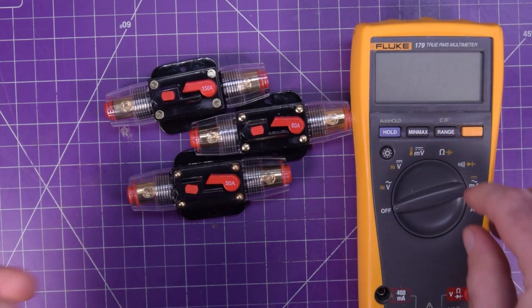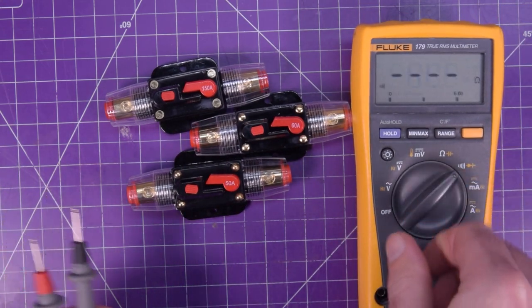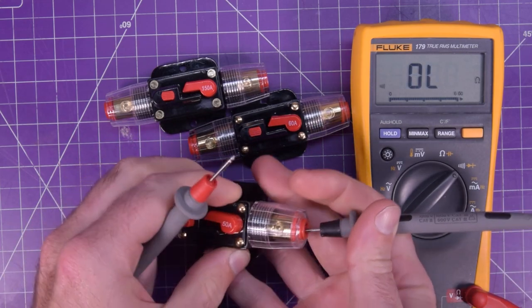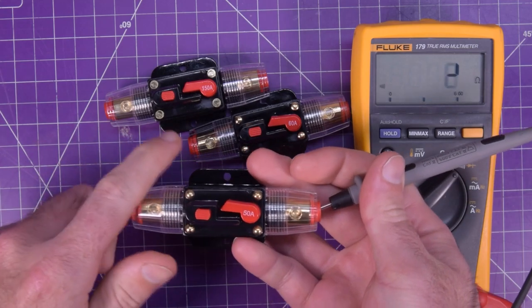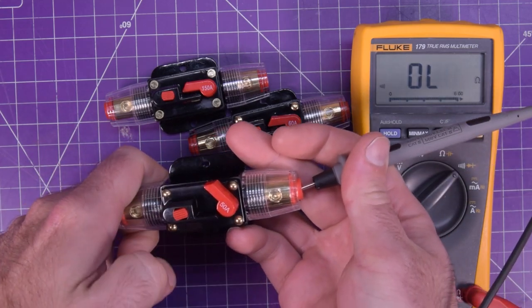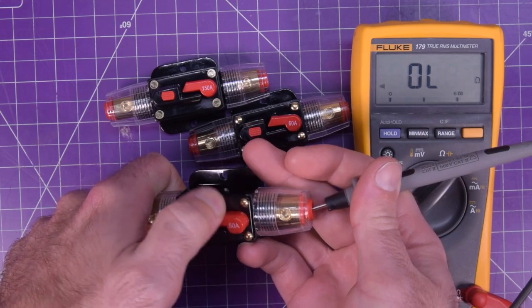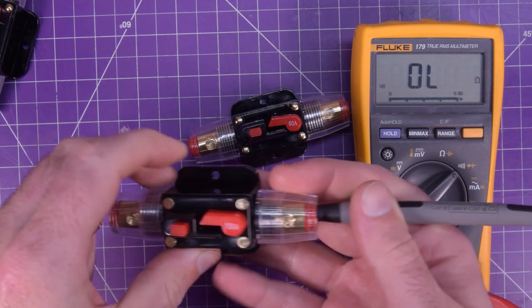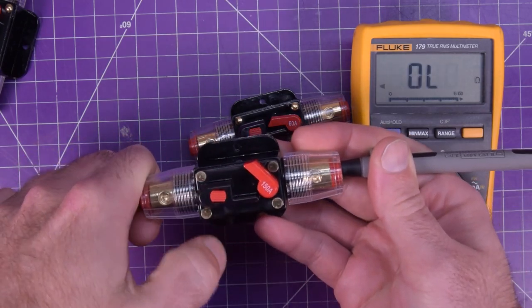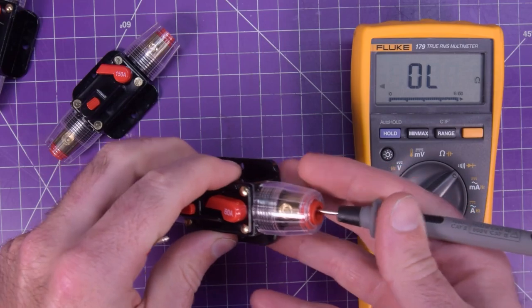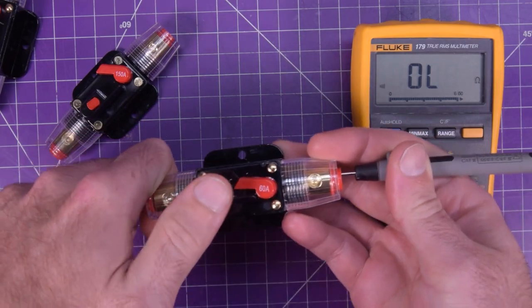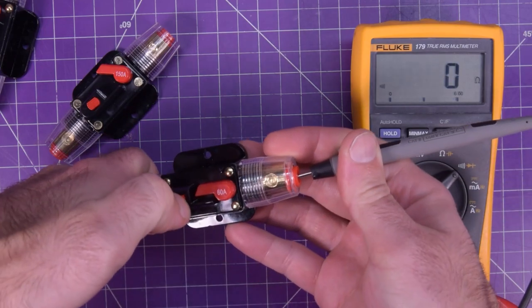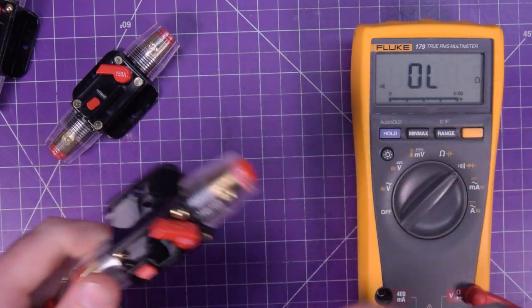Got the Fluke 179 here, and I'm going to set it to continuity buzzer. So when I stuff this in here, and I stuff the other end in the other end. Yeah, continuity. And then when you press the button, no more continuity. So that does work. That does work. I wasn't pressed in. There we go. That works.